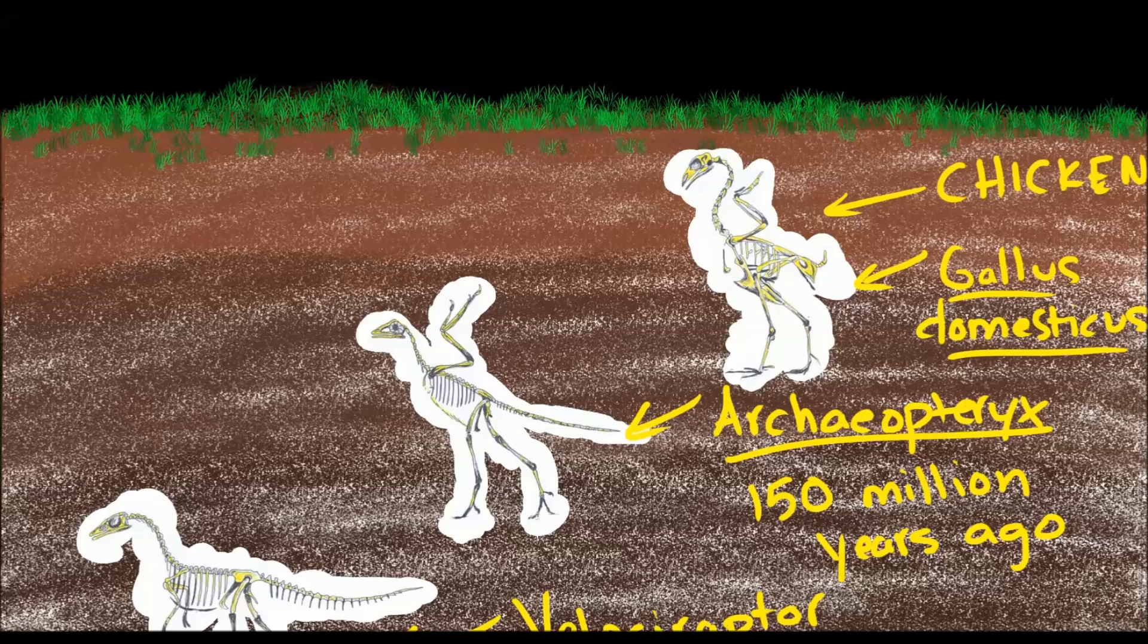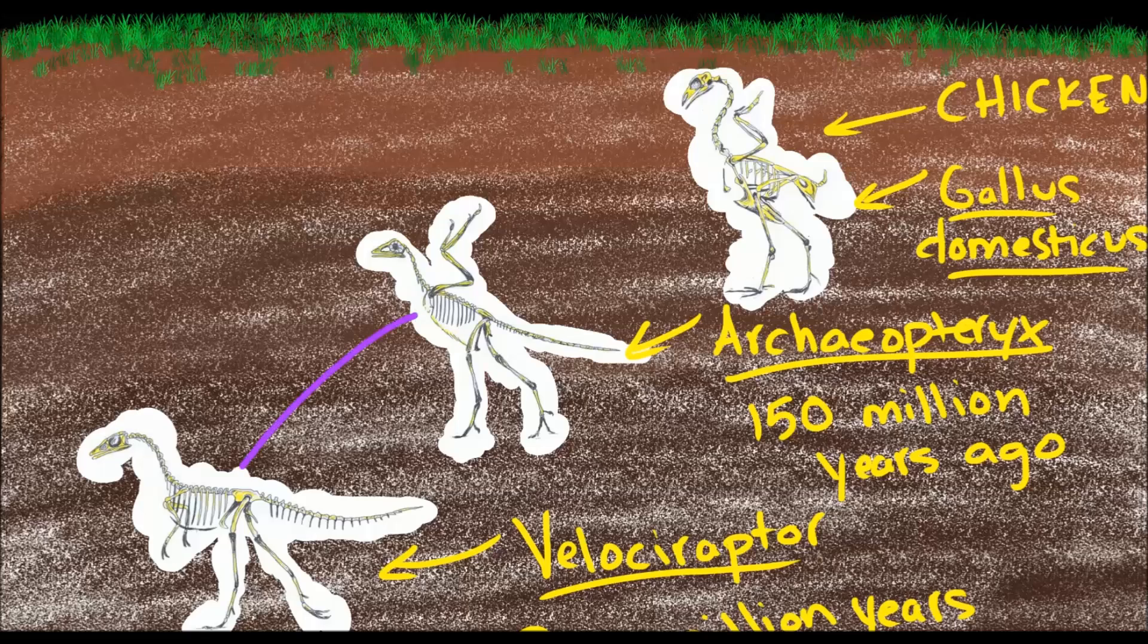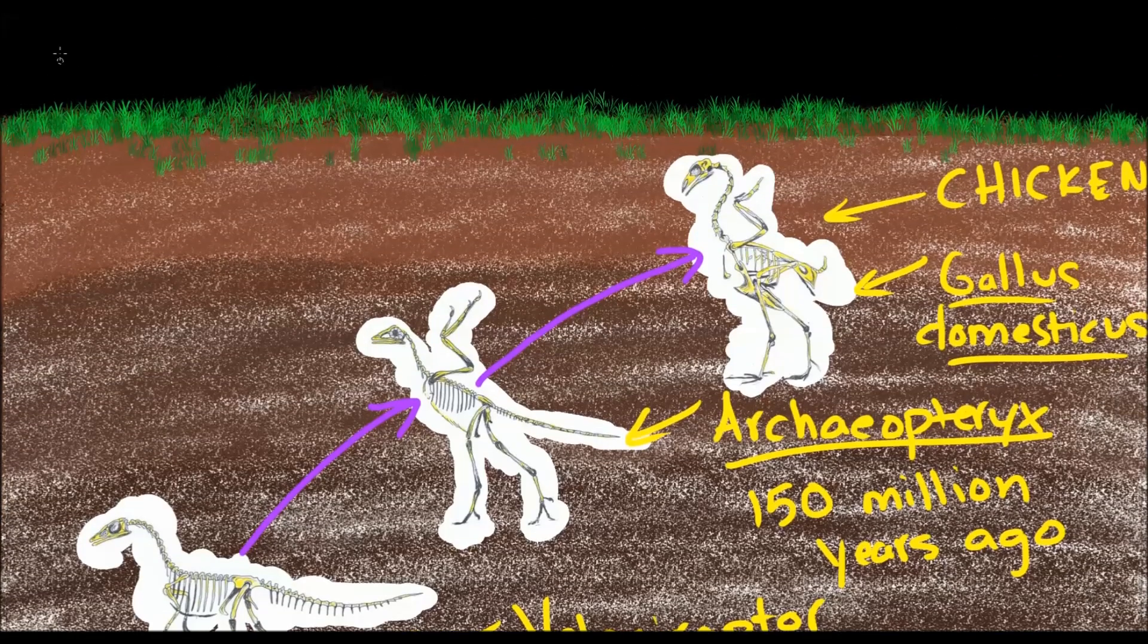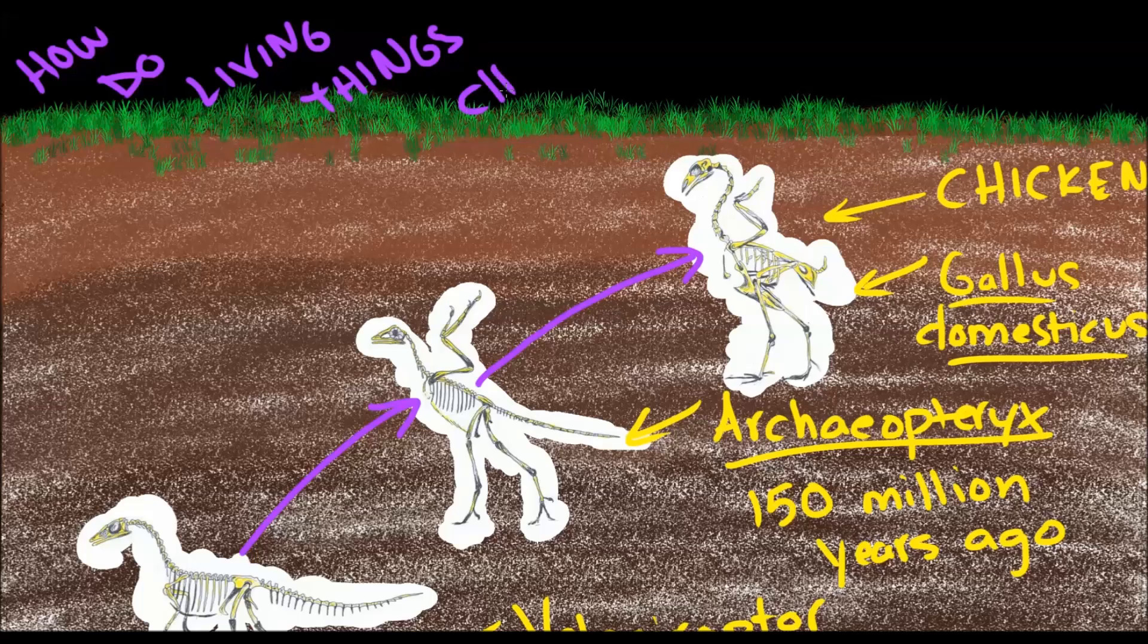And it shouldn't surprise us that it looks like a dinosaur because chickens are dinosaurs. In fact, we know now that over a long period of time, starting a long time ago, animals that looked a lot like velociraptor changed into animals that looked a lot like Archaeopteryx. And animals like Archaeopteryx changed into chickens. And that's amazing. Different animals changing over time. We should wonder, how could that happen? And that's our big question for today. How do living things change over time?